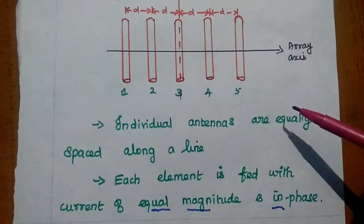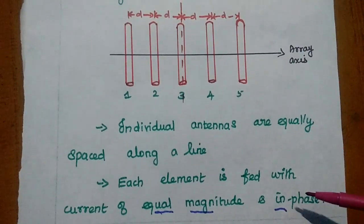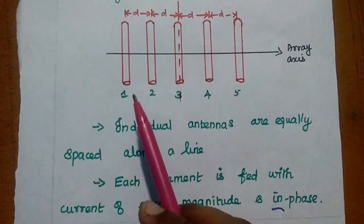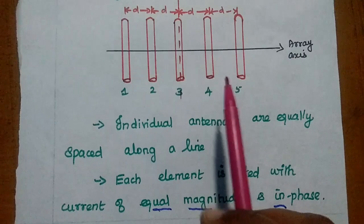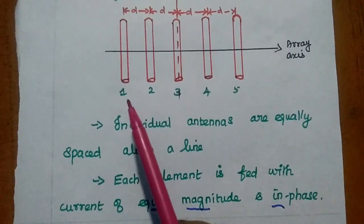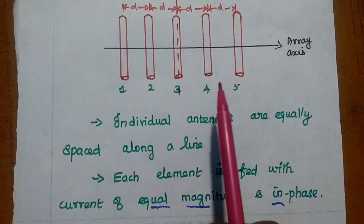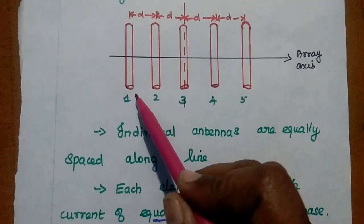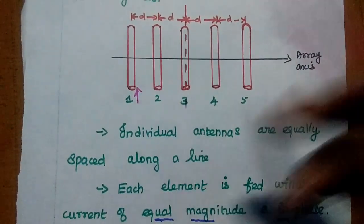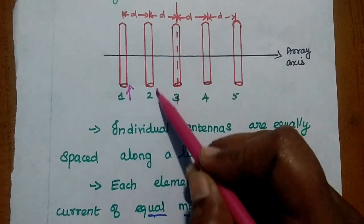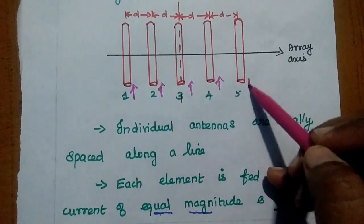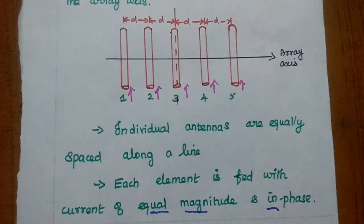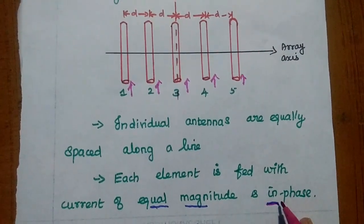There are two important points to be considered in a broadside array. First, individual antennas are equally spaced along a line — the spacing between the elements is the same. Second, each element is fed with current of equal magnitude and in phase. So the current is always in phase, with equal magnitude. This in-phase and equal-magnitude feeding is the key point.